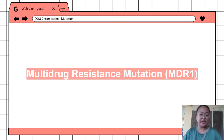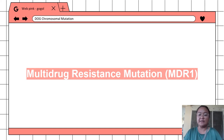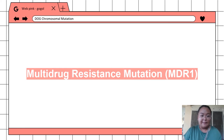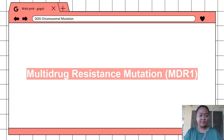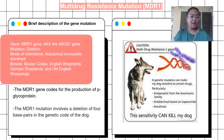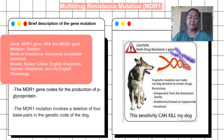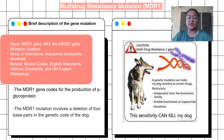The third example is the multidrug resistance or MDR1 gene mutation. The MDR1 gene codes for the production of a protein known as P-glycoprotein, which acts as a pump in normal cells, helping to clear chemicals and possible toxins from the cell. For the MDR1 gene mutation, also known as the ABCB1 gene, the type of mutation is deletion and the mode of inheritance is autosomal with complete dominance. The breeds affected include Border Collies, English Shepherds, German Shepherds, and Old English Sheepdogs.